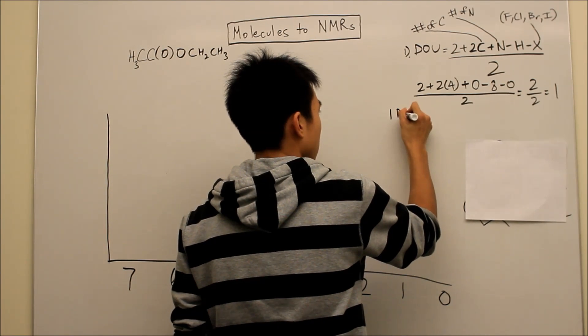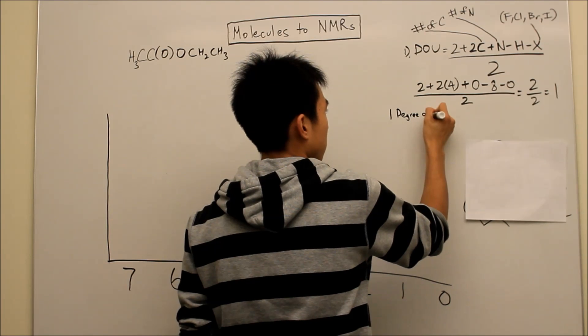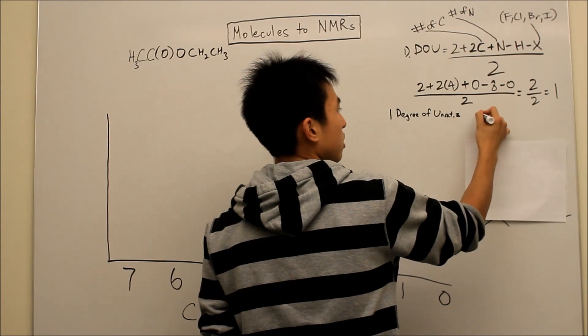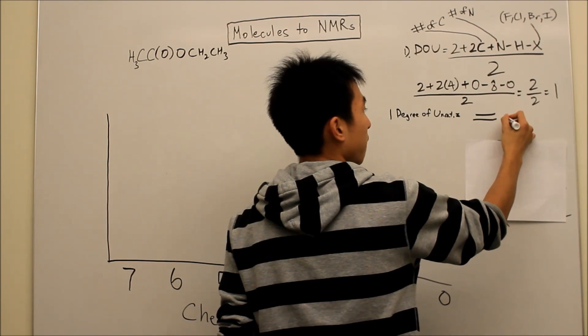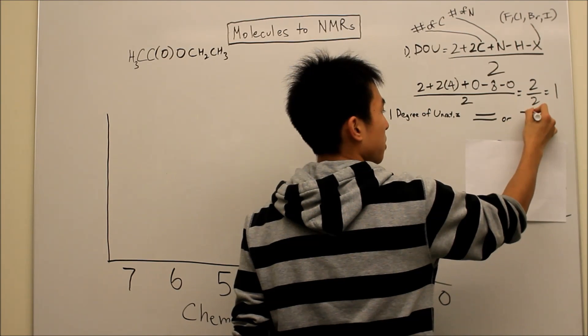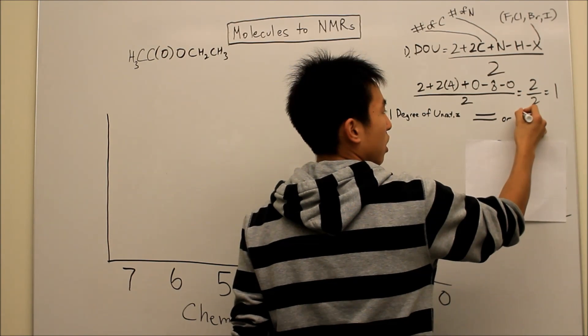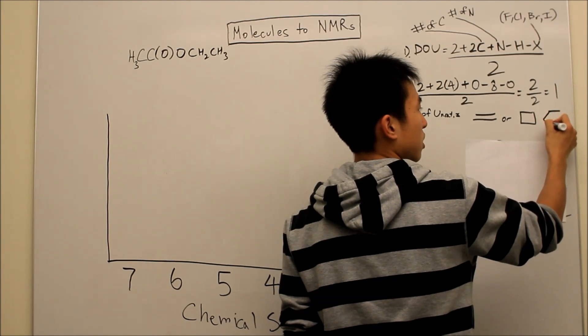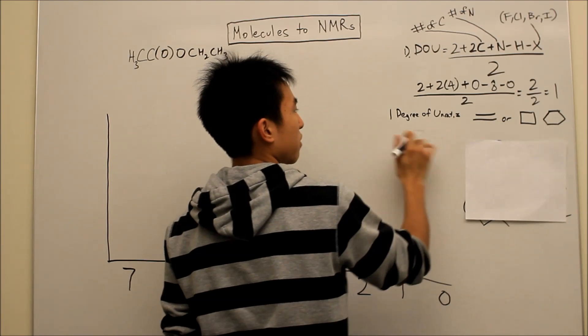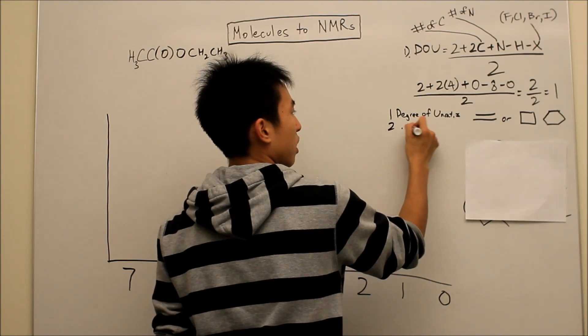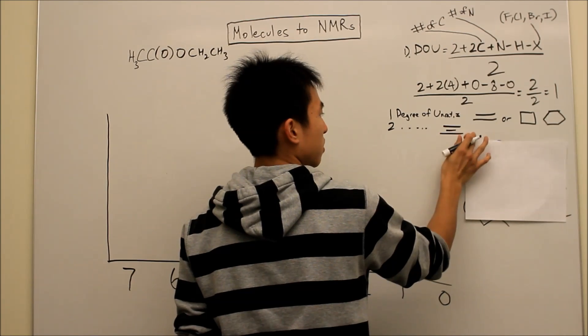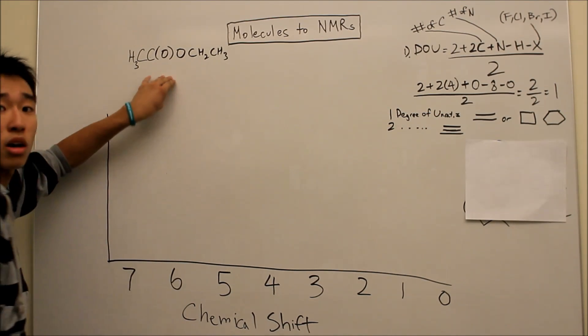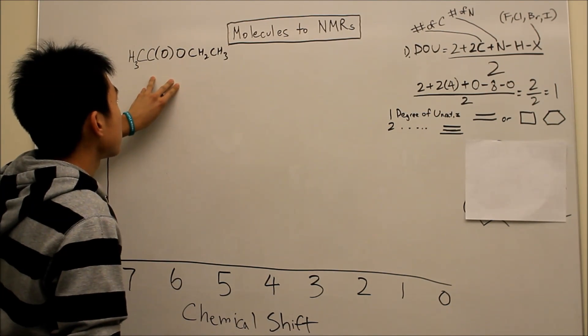Okay, so let me just also go over this. 1 degree of unsat can be either a double bond or a ring structure. So maybe like, I'll put a square, cyclobutane or cyclohexane, which I'm sure you guys have seen before. Okay, these are just 1 degree of unsat. 2 degrees of unsat would be a triple bond. Alright, so you got 1 degree of unsat there. So that means that somewhere in our chemical, there must be a double bond.